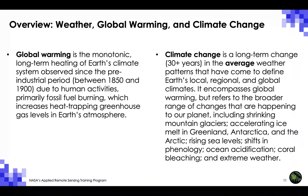Global warming is the monotonic, long-term heating of Earth's climate system observed since the pre-industrial period, between 1850 and 1900, due to human activities, primarily fossil fuel burning, which increases heat-trapping greenhouse gas levels in Earth's atmosphere. Worldwide, since 1880, the average surface temperature has risen by about 1 degree centigrade relative to the mid-20th century baseline of 1951 to 1980, on top of an additional 0.15 degree centigrade of warming from between 1750 and 1880.